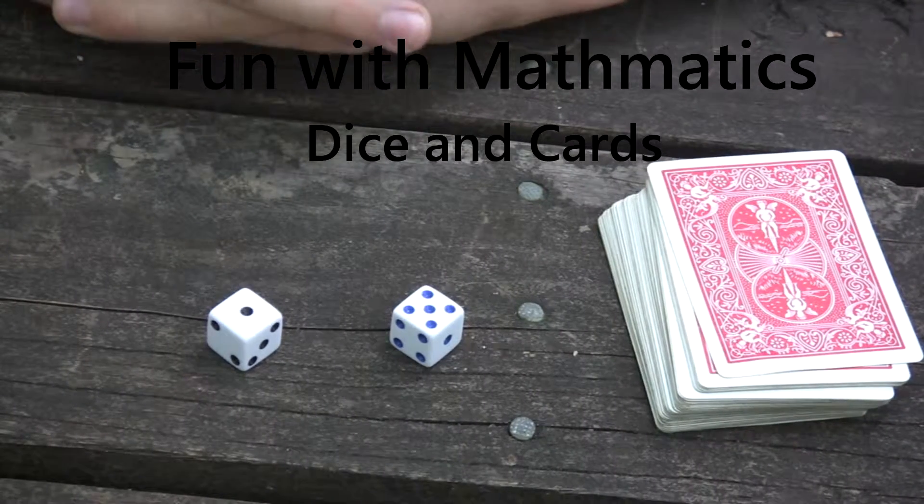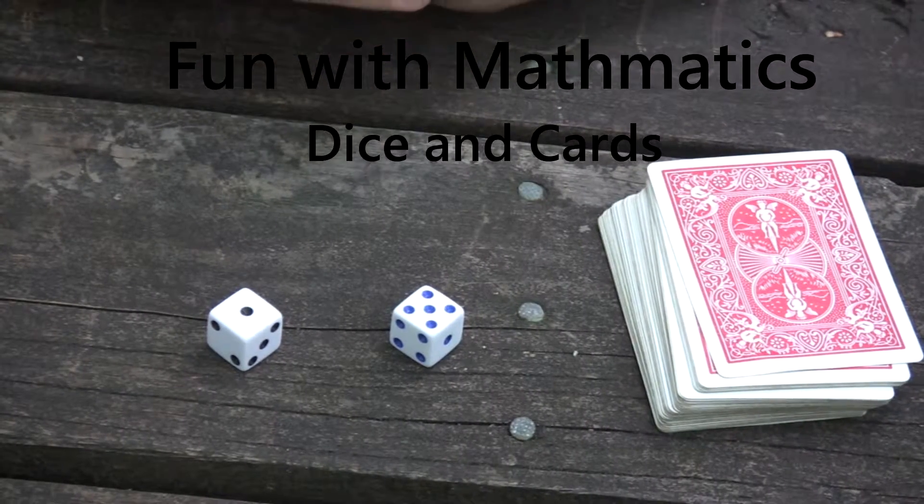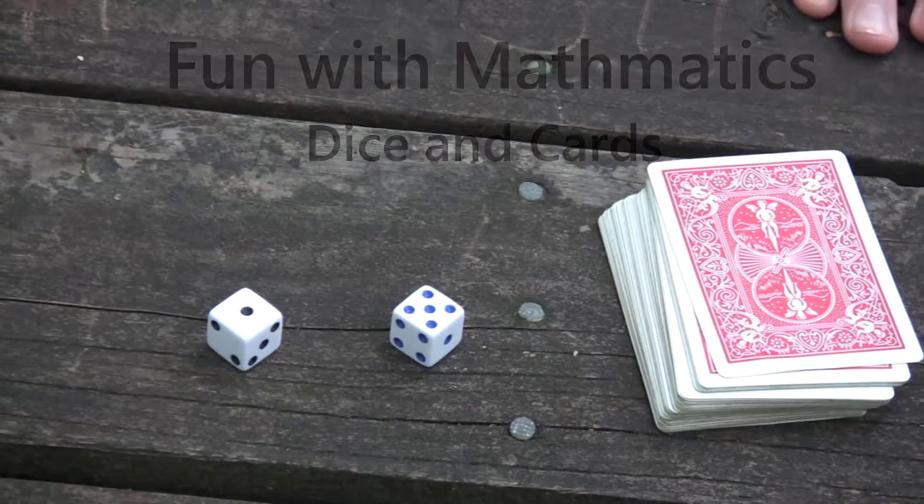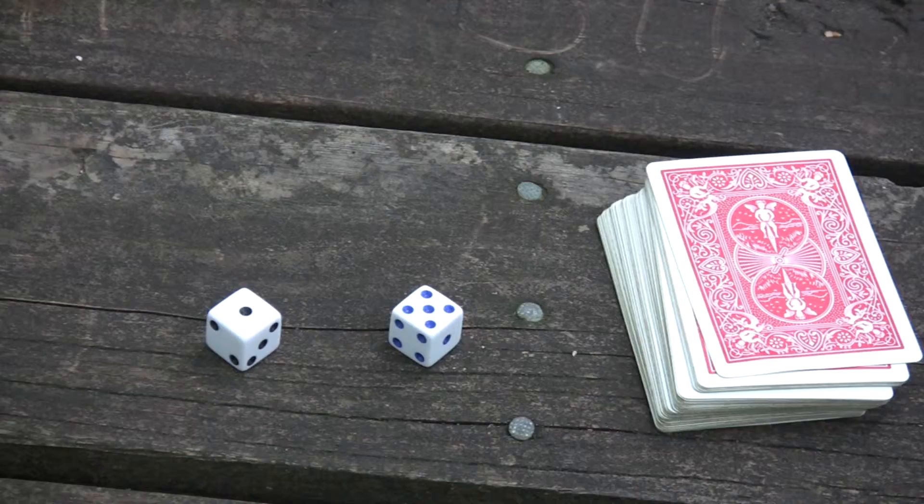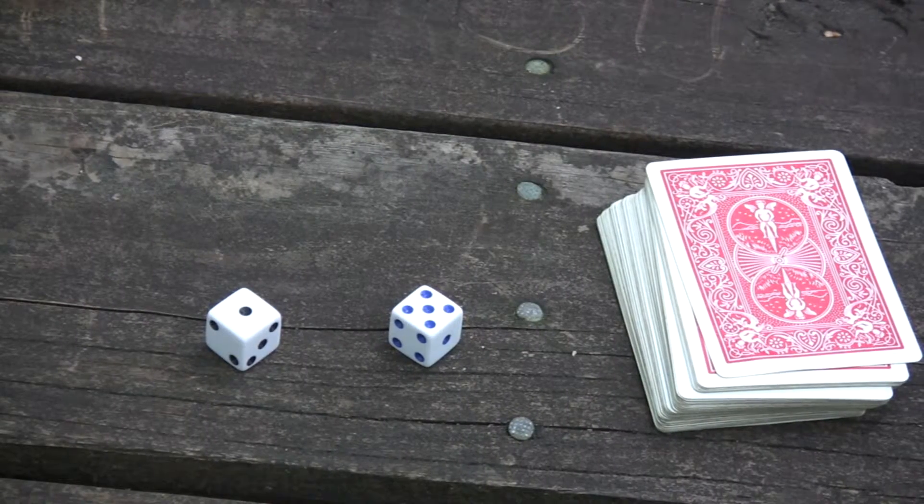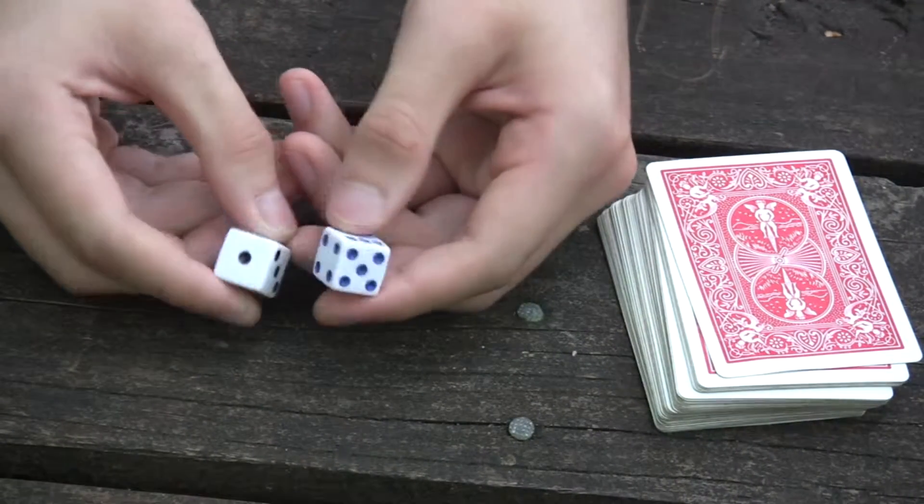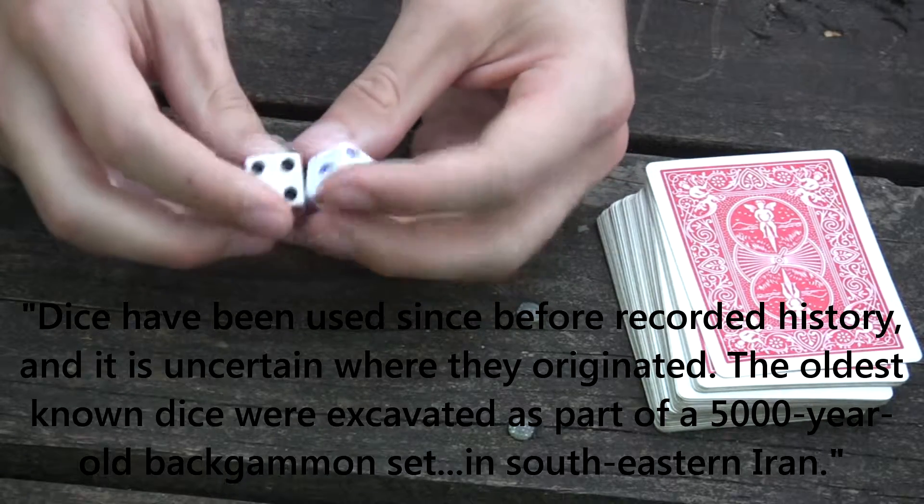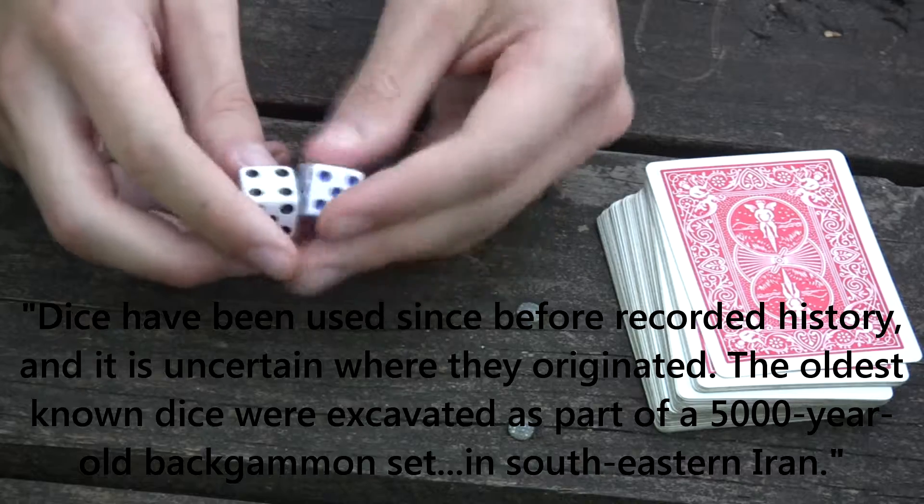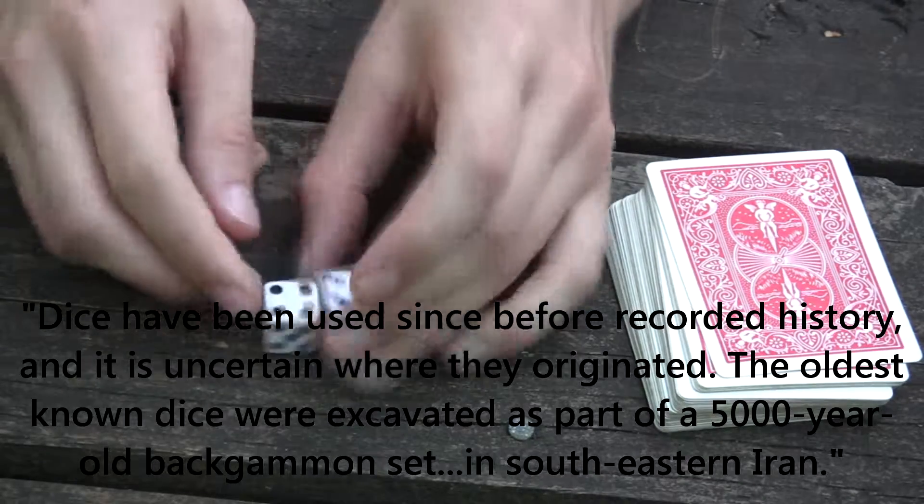As important as math is to many very serious things, and as important it is to physics and all sorts of very serious things, sometimes it is nice to look at the fun side of mathematics, or rather the mathematics of some fun things. This can be important because you take something as simple as dice that have been around for thousands of years, this is actually where a lot of our current theories of probability come from.